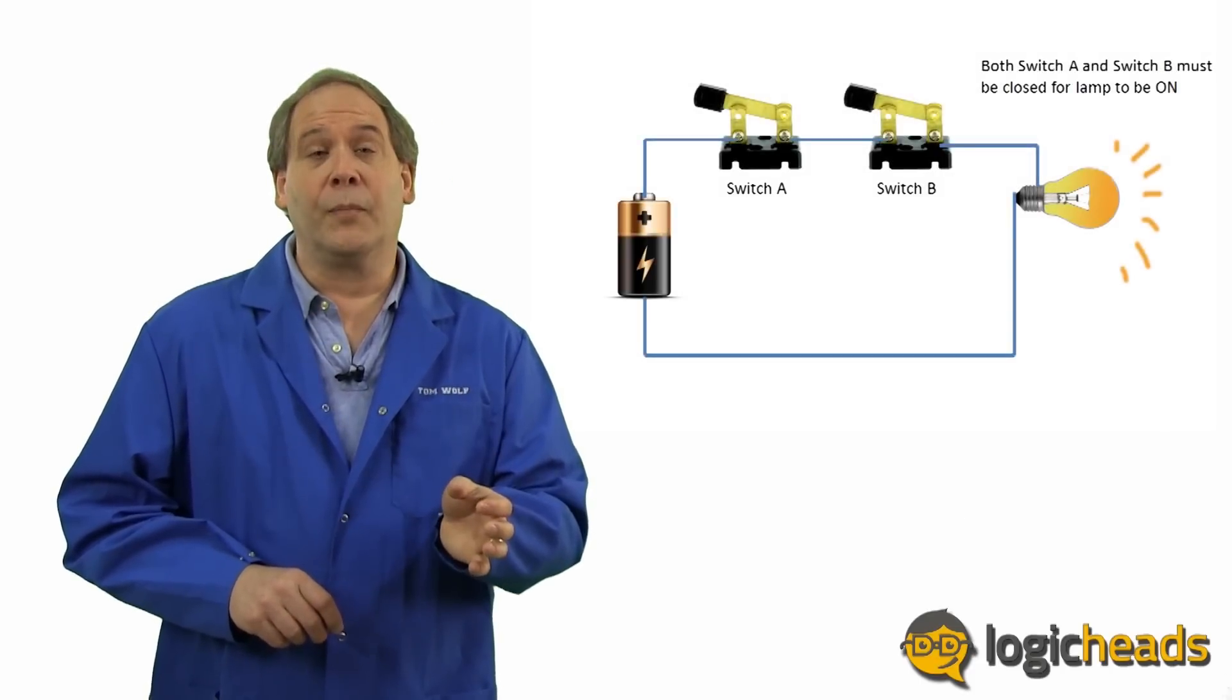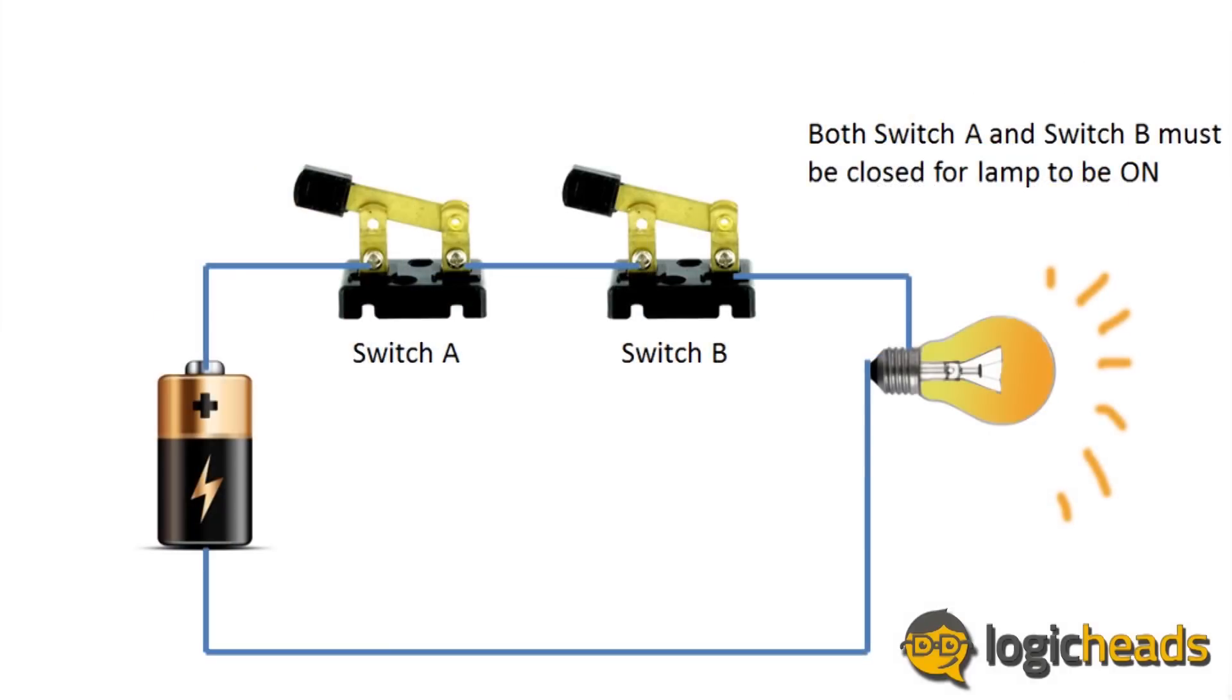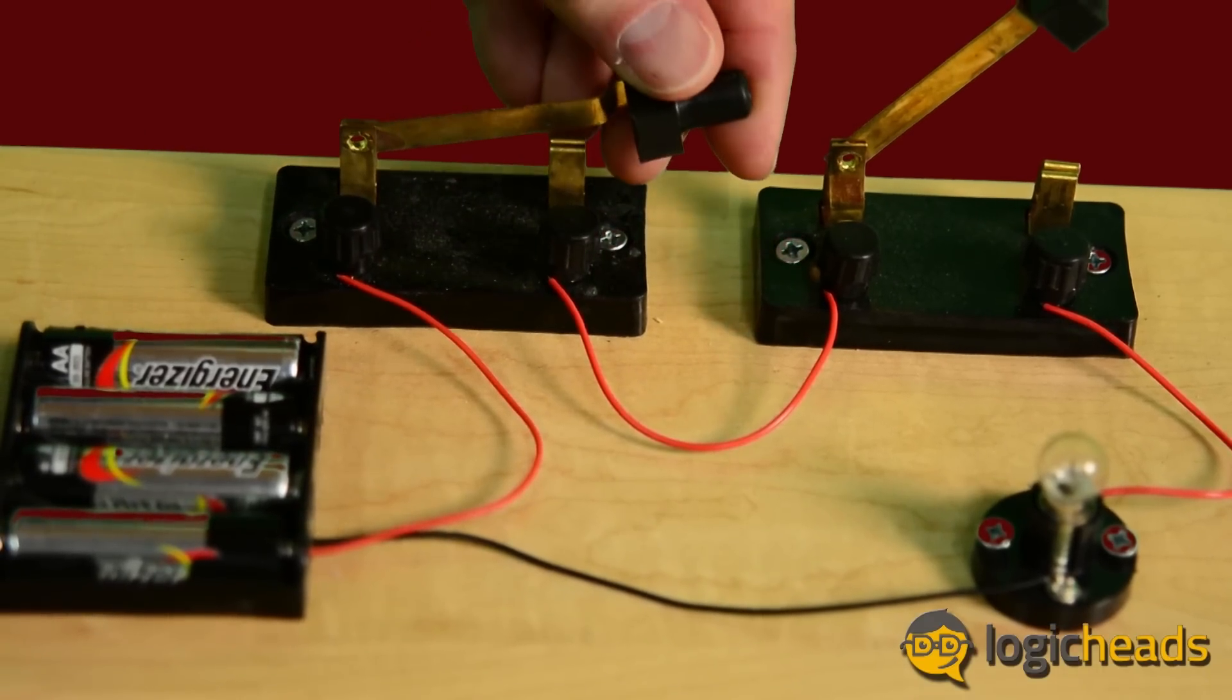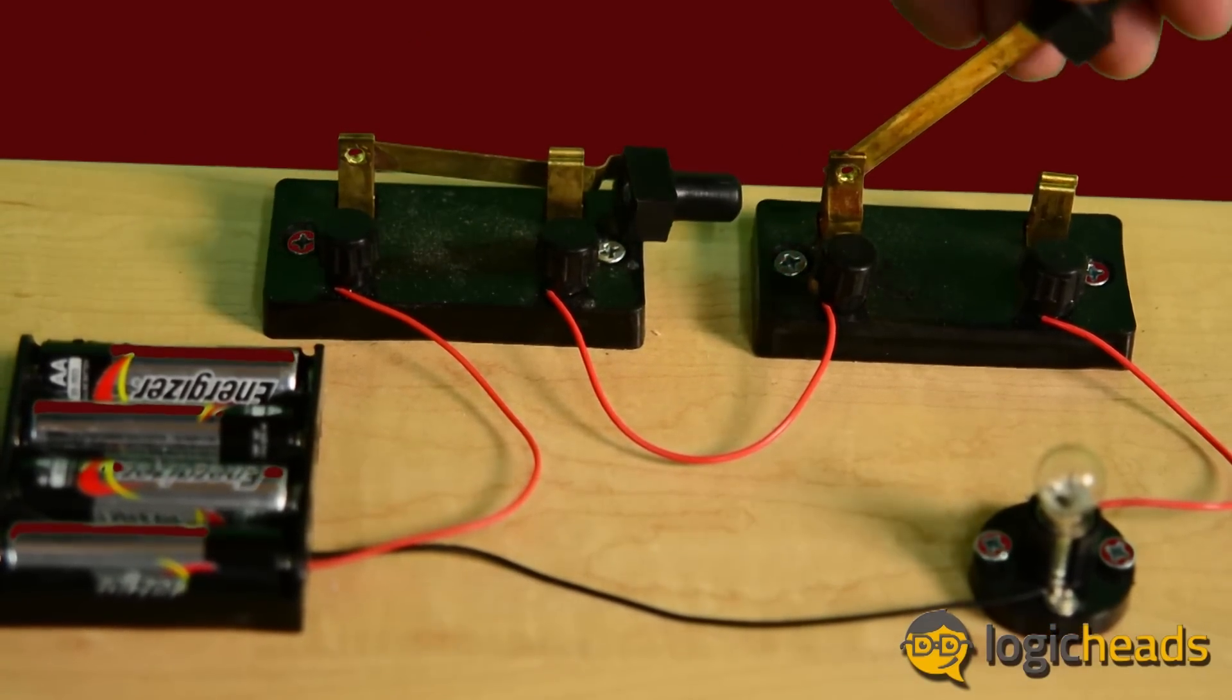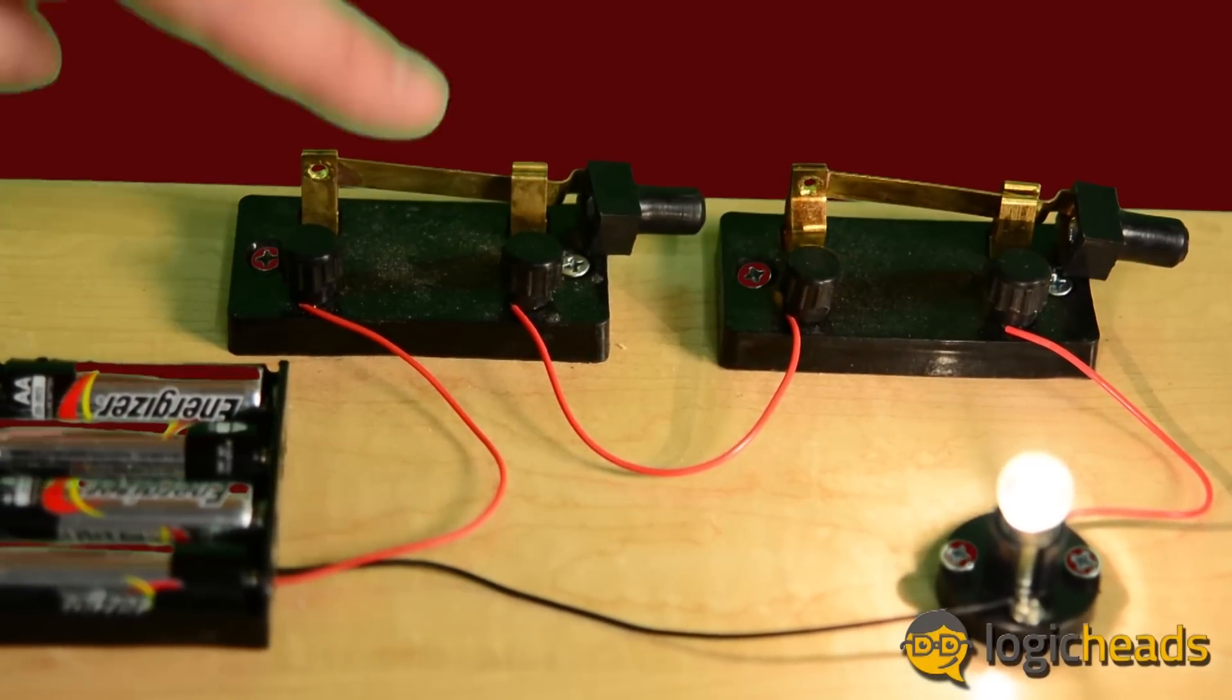And the series circuit, which is really just implementing the logical AND function. Only if A and B switches are closed will the lamp light. Otherwise, the lamp is off.